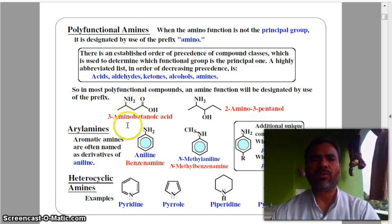Now it has NH2 as well as carboxylic acid. Two, three amino butanoic acid. Look at here: 2-amino-2-pentanol because alcohol is here. This is aniline and N-methylaniline.